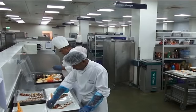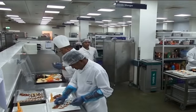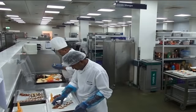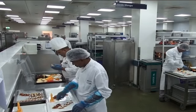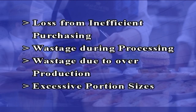The planning of all other departments is in accordance with the functioning of the kitchen and the menu planned. In the production of food, the four major factors to be considered for applying strict control procedures are loss from inefficient purchasing, wastage during processing, wastage due to overproduction and excessive portion sizes.